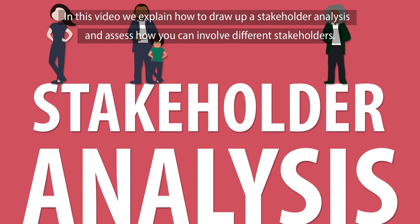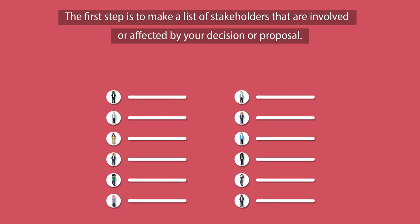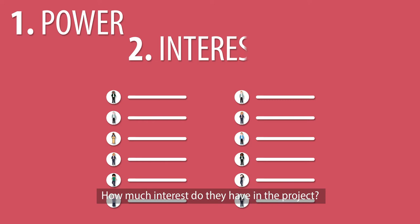The first step is to make a list of stakeholders that are involved or affected by your decision or proposal. The next step is to score all the stakeholders on the following three factors: how much power do they have? How much interest do they have in the project? And three,